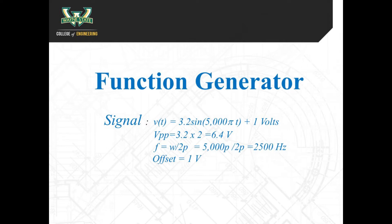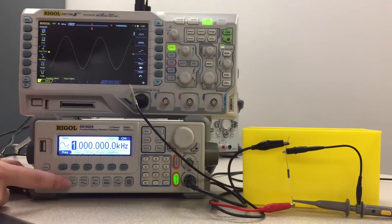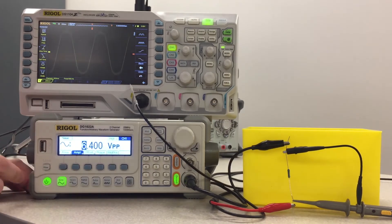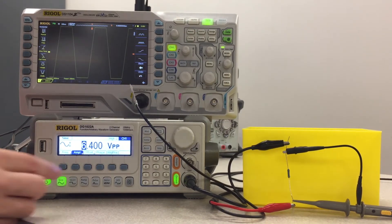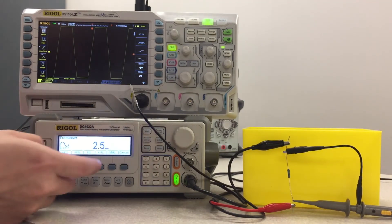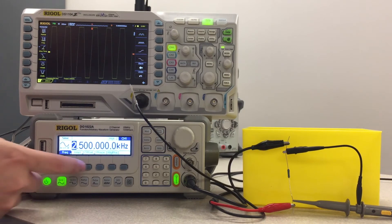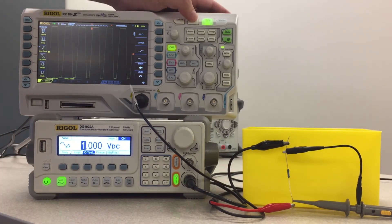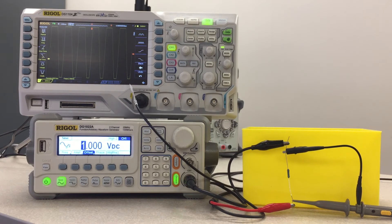Refer to the following steps to generate a specific sine waveform. Press the sine function key and then press the amplitude key to set the VPP value. Press the frequency key to adjust the frequency. Then press the offset key to set the offset voltage.